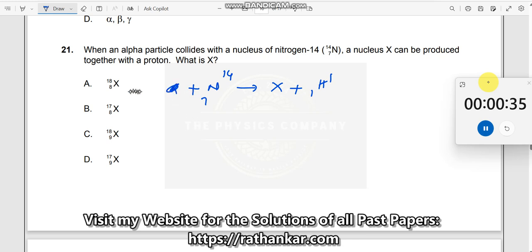So what I will do is for alpha, let me write this as 2He4. Alpha nucleus is like this.